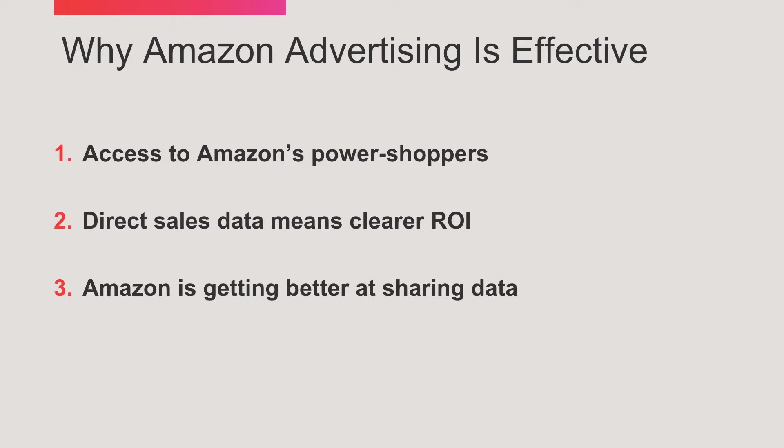Having access to these generally affluent and very loyal shoppers makes this advertising channel very effective. The other reason Amazon advertising is effective is that the advertising is run in the same platform as the sales are reported. By comparison with Facebook or Google, there can be leakage between the pixel picking up the actual sale and attributing it back to an advertising campaign. With Amazon advertising, you can see a very clear path from customer seeing an impression of your ad, clicking on it, and then buying the product a week later.